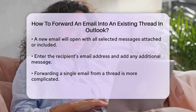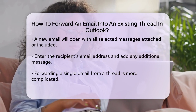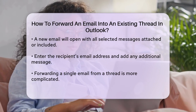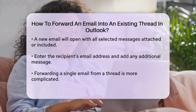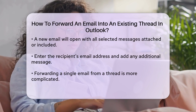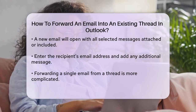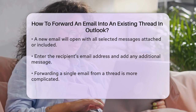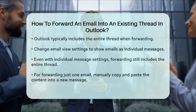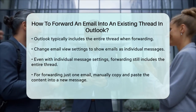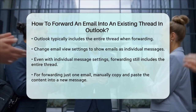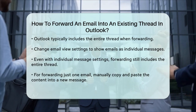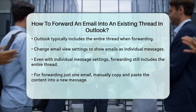One workaround is to change your email view settings. Go to the gear icon in the top right, select View All Outlook Settings, and under Message Organization, check the box to show email as individual messages. However, even with this setting, forwarding an email from a thread will still include all previous emails in the conversation.